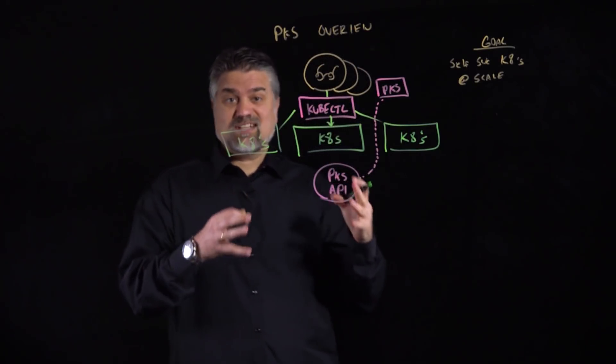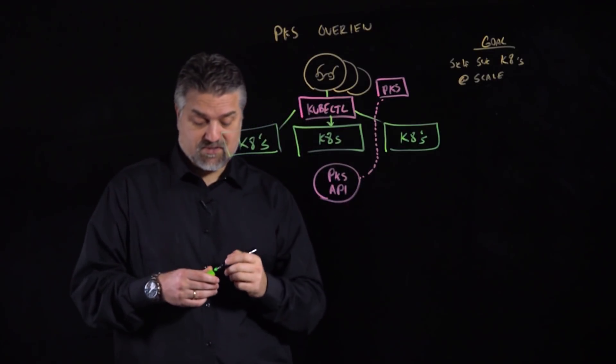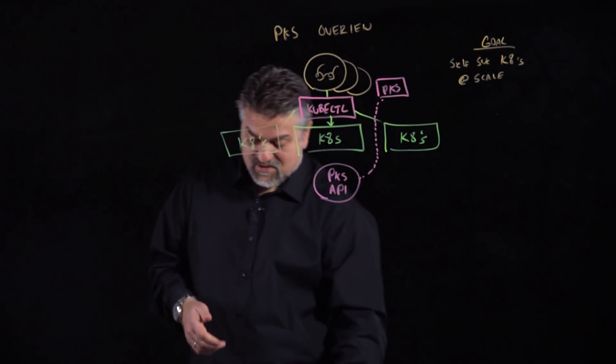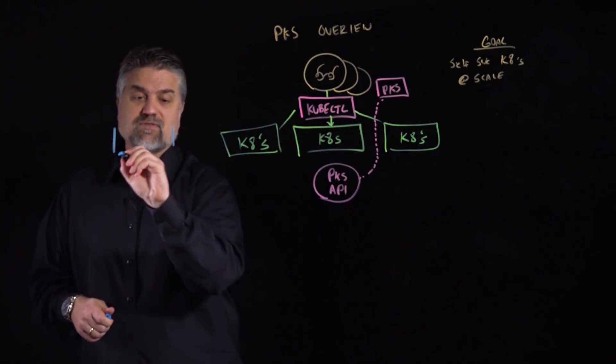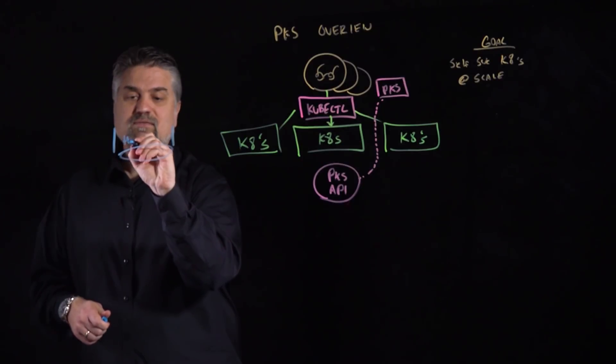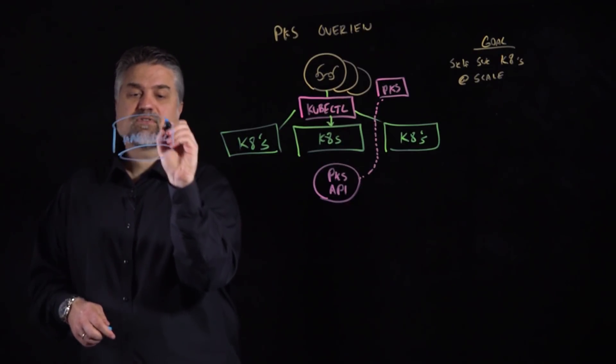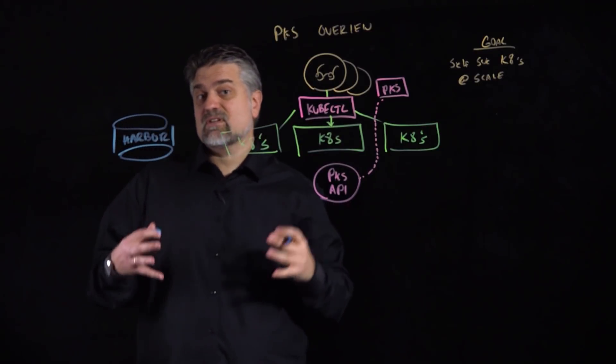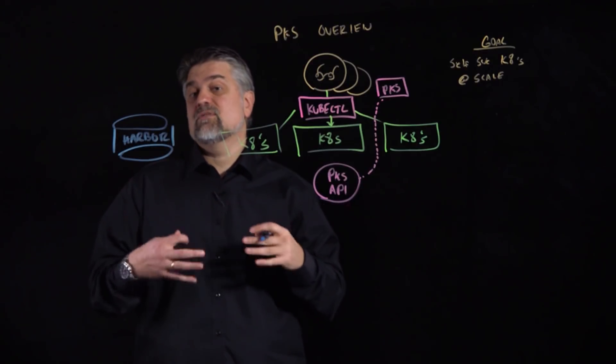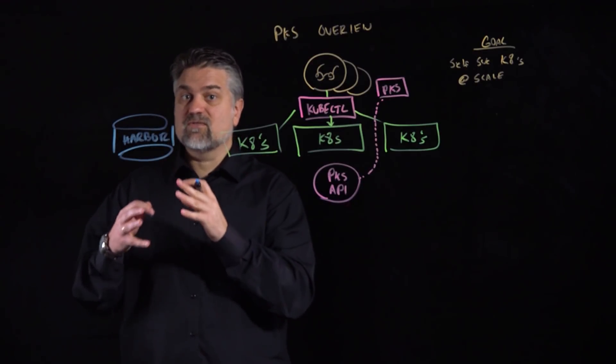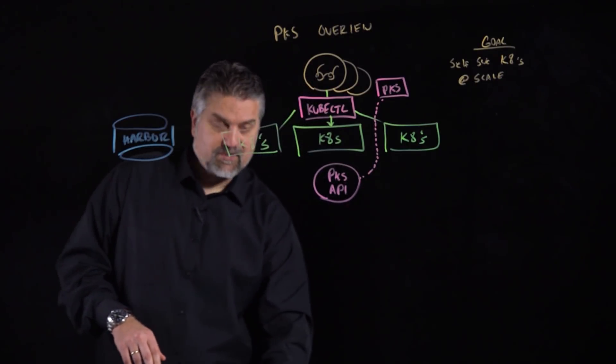To be able to run applications on Kubernetes, to really get business value out of this, you also need to have a lot of other key services. One of those key services that must exist is you need a place to store your images. You need a registry of some sort. So we have VMware Harbor which is an open source implementation of Docker registry as well as some other key services like Claire for CVE scanning and Notary so that we can do image signing and ensure there's a degree of validity to our images that we're storing and pulling. And we got to be able to offer that store and pull experience.